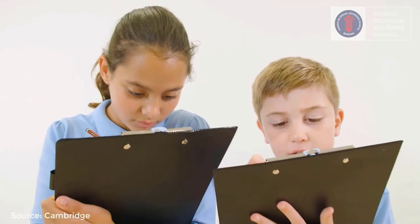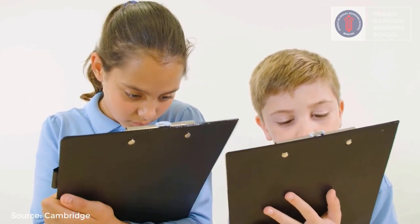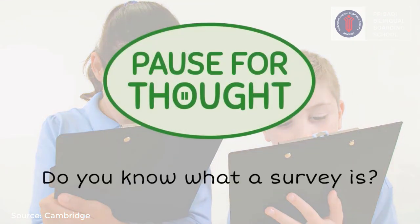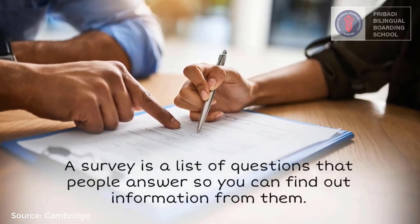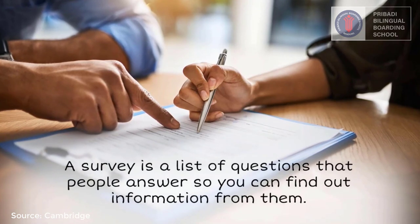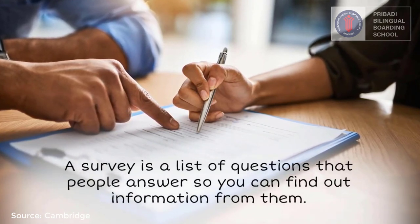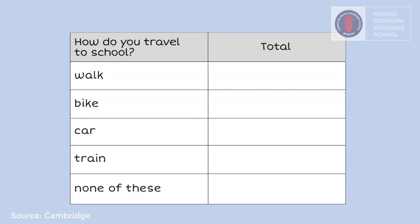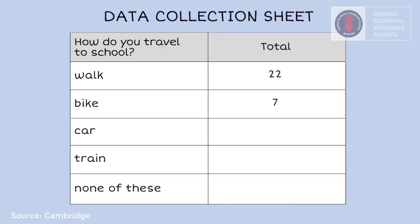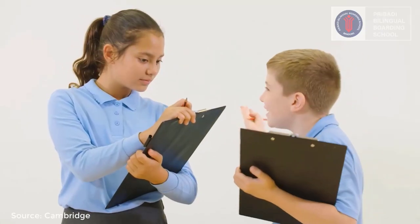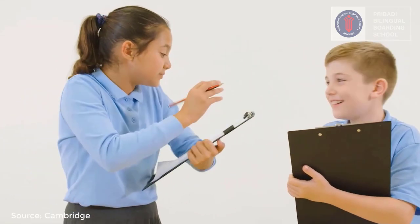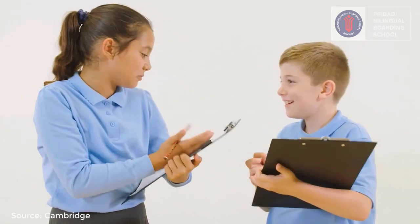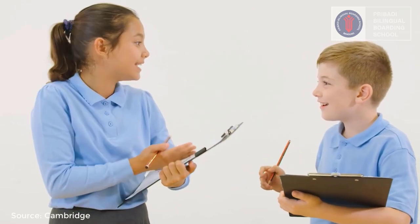They can find out about how people take medicines by doing a survey. A survey is a list of questions that people answer so you can find out information from them. Survey questions must be short and easy to understand. You will also need a data collection sheet. Let's do a tally chart — we can ask some questions, put the answers into a chart, and then add them all up.